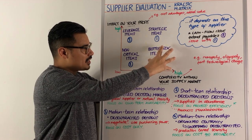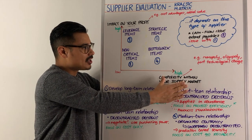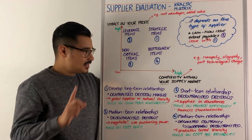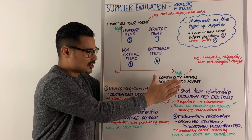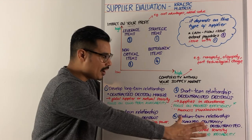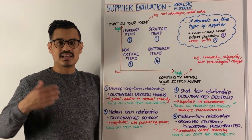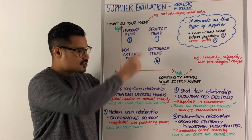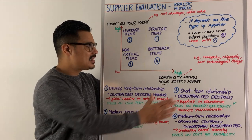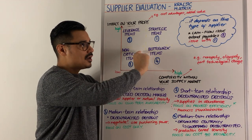Bottleneck items are the opposite of leverage items: you perceive the market to be very complex, but it doesn't have much impact on your profits. Consider a medium-term relationship here, but note it is a complex market so you probably want centralised organisation, with execution of decisions at a decentralised level. This is likely production-based scarcity, as opposed to the natural scarcity seen in strategic items. Focus on both cost and reliability — you need these items and don't want them to be bottlenecked.